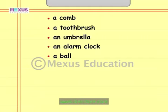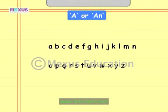Did you notice? There are some words in this list that have the word 'a' before them, and some that have the word 'an' before them. Do you know why? Let's find out. There are 26 letters in the English alphabet. Out of these, the 5 letters A, E, I, O and U are called vowels.